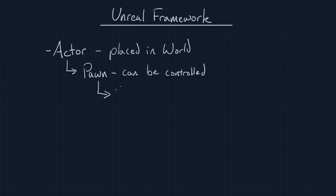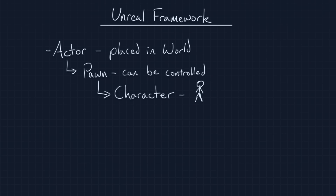Down from Pawn, we have the concept of a Character. A Character is a Pawn, and a Pawn is an Actor. So a Character can be placed in the world and it can be controlled, but it is a special type of Pawn designed to make bipedal or roughly humanoid characters easier to create. The Character class includes a slot to put a Skeletal Mesh — the actual mesh you might create in 3ds Max, Maya, or Blender. It also has a Physics Capsule that goes around your Character to calculate collisions so that things can bounce off of him.